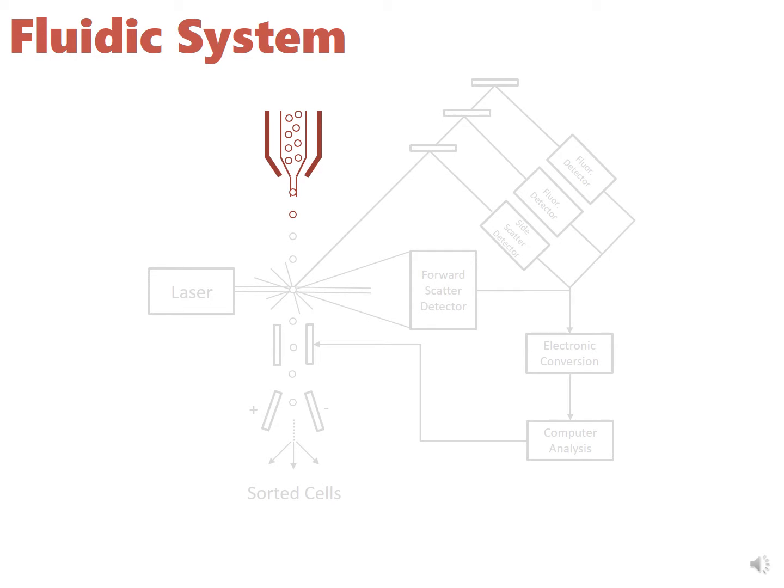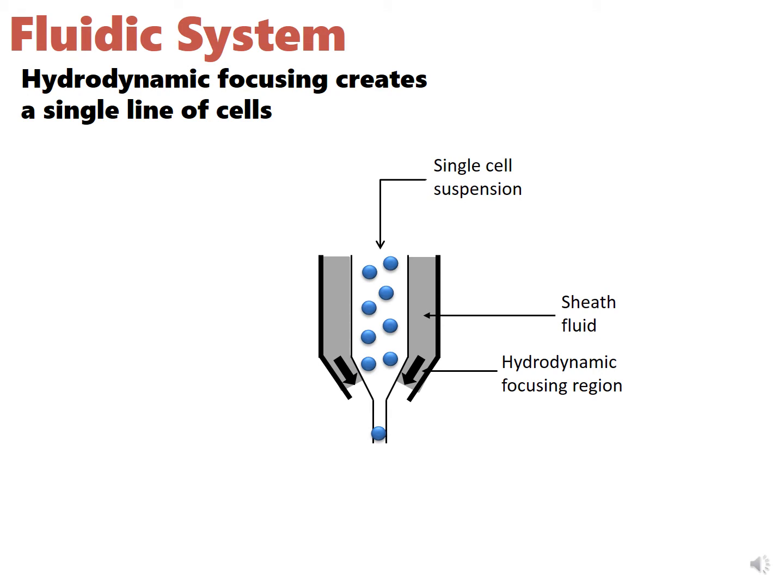The fluidic system introduces the cells to the process. In order to obtain individual cellular information, we need to be able to illuminate each cell individually. This is managed by the fluidic system.